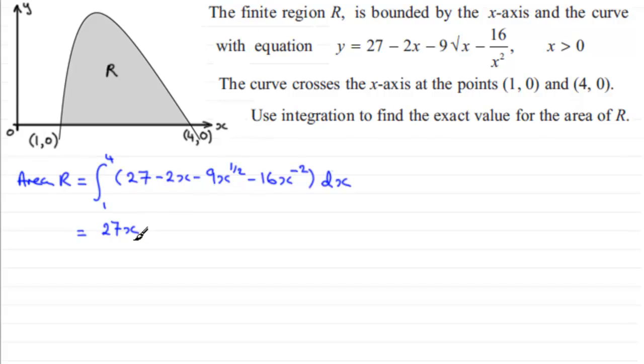So we have 27x. For the minus 2x, add 1 to the power so you've got x to the power 1 add 1 which is 2, and divide by the new power.